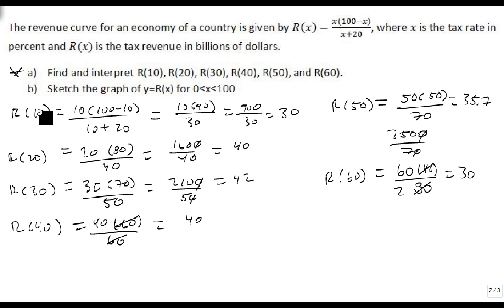If our tax rate is at 10%, we'll make 30 billion. If it's at 20%, 40. At 30%, 42. At 40%, 40 again. At 50%, 35.7 billion. At 60%, 30 billion. So there's clearly a point where we want to set up and find our value.